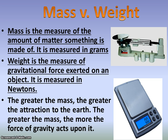Mass is the measurement of the stuff that is there, and weight is the measurement of gravity pulling down on that stuff. Suppose I was holding an expo marker and I asked you: does this marker have the same mass on the earth as it does on the moon? Hopefully your answer would be absolutely yes — the marker's stuff does not change between earth and the moon. And if I asked you if it had the same weight, you would say no, because there's less gravity on the moon, so it's going to weigh less.